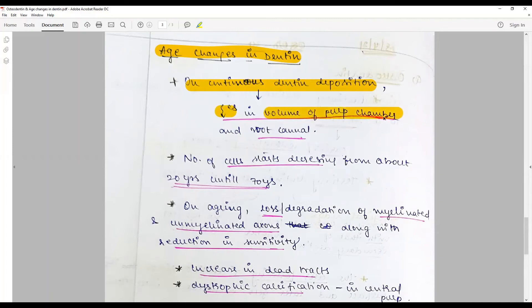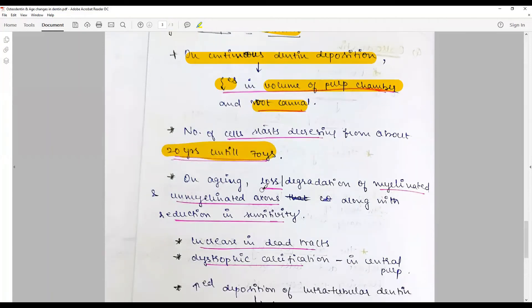The pulp chamber becomes progressively narrowed. The number of cells starts to decrease from about 20 to 70 years, after which it totally regresses. On aging, there is loss or degradation of myelinated and unmyelinated axons.